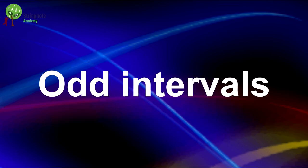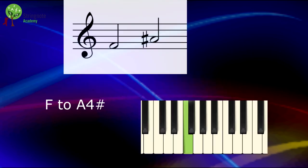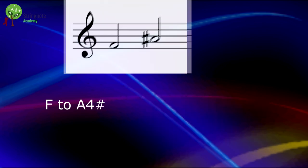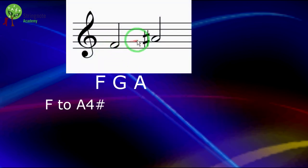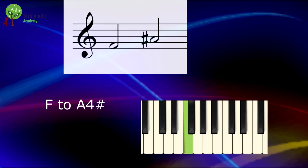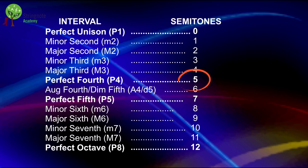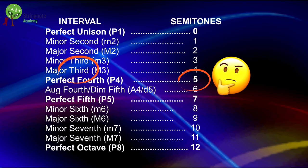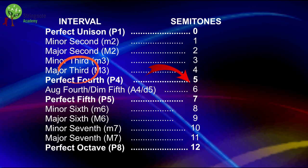Now this is when the intervals go mad. What happens if I have this? I work out the number and this is a third: one, two, three. I count the semitones: zero, one, two, three, four, five — and I get five. It's clearly a third, but it's greater than a major third. What is it then? It is an augmented third.